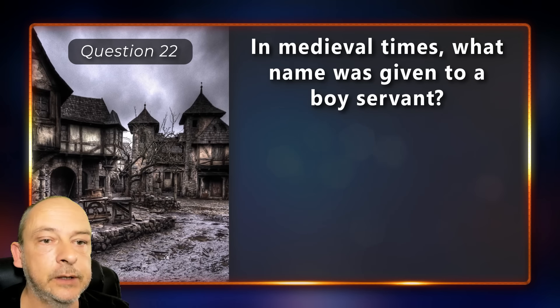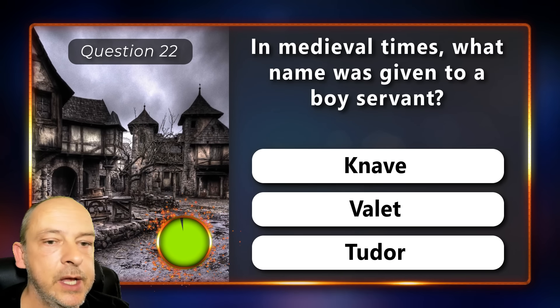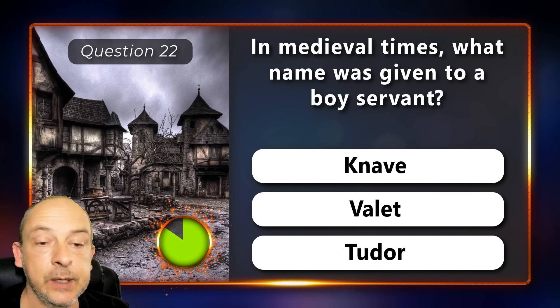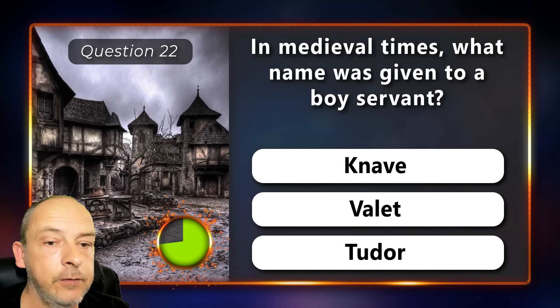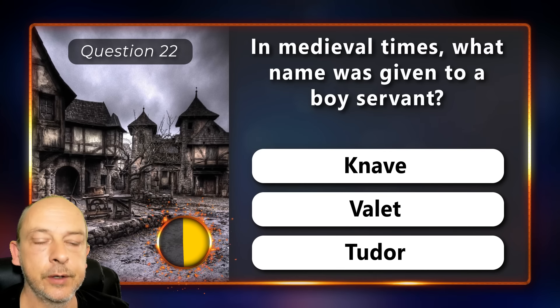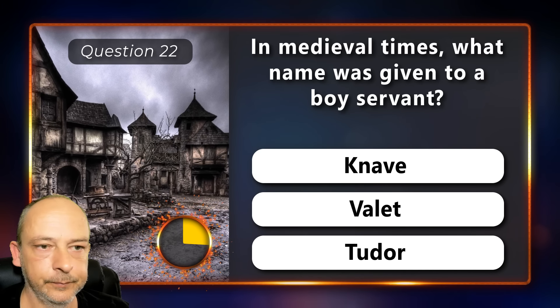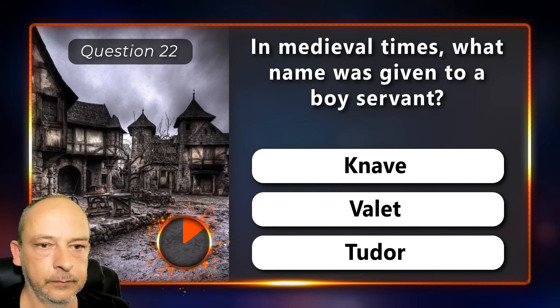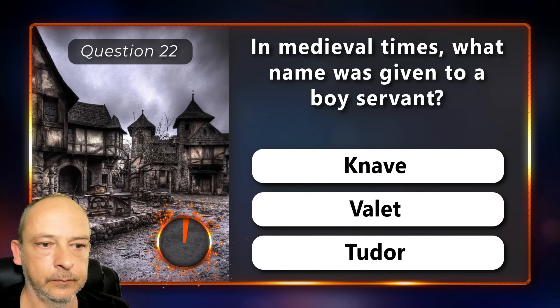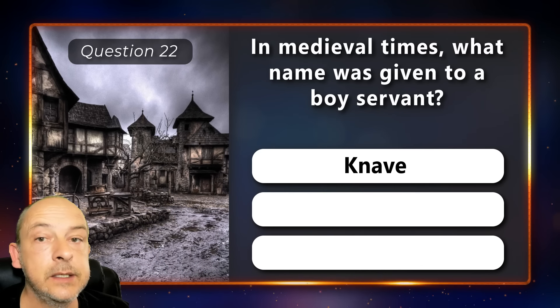In medieval times, what name was given to a boy servant: was it a knave, a valet, or a Tudor? The correct answer is knave.